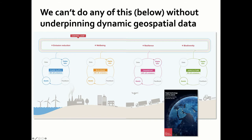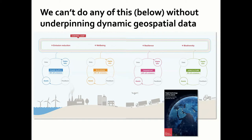Another Royal Society report looked at digital technology and the planet — what it says is the key criticality of data at every point in understanding net zero. If you don't have the data, then you can't do the digital twins, you can't look at the feedback potential, you can't look at your assets and what changes you need to make. That means you can't do the things around emissions reductions, around well-being, around resilience, and around biodiversity.